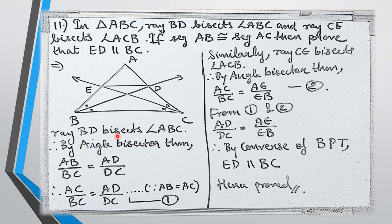Ray BD bisects angle ABC. By the angle bisector theorem, AB upon BC equals AD upon DC. Since AB equals AC, we can replace AB with AC. Therefore AC upon BC equals AD upon DC. This is our first equation.